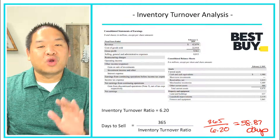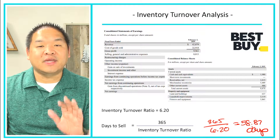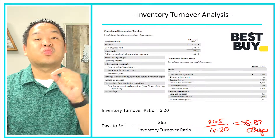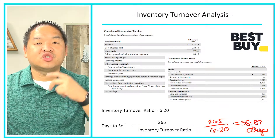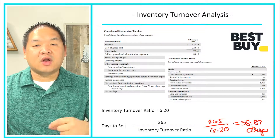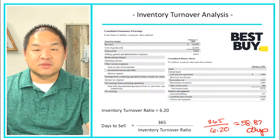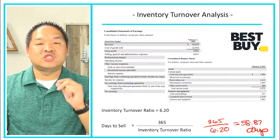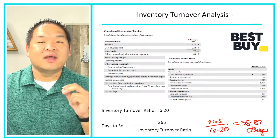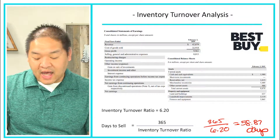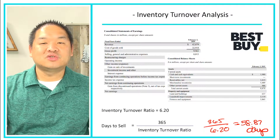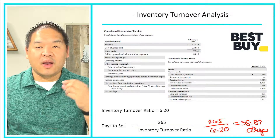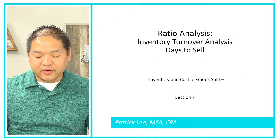Is 58.87 days good or bad? We're not sure — we have to look at the industry. But if the industry is turning over their inventory in 30 days, this is really bad: we're taking twice as much time to sell our inventory to customers. We'd need to either cut back on our inventory or find a way to have customers buy more quickly. So 58.87 days — this is usually the best way to convey this message to our bosses.